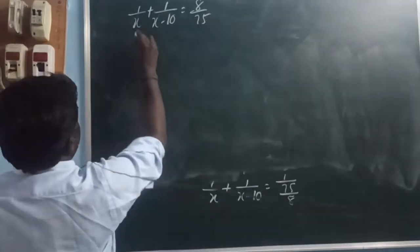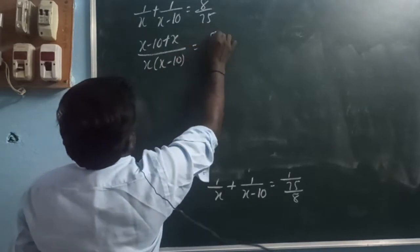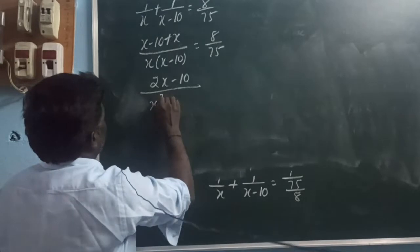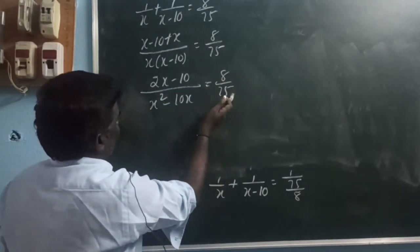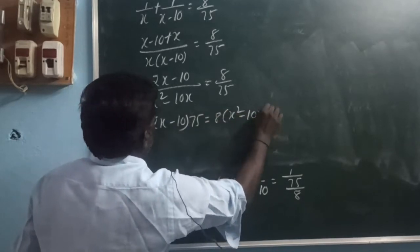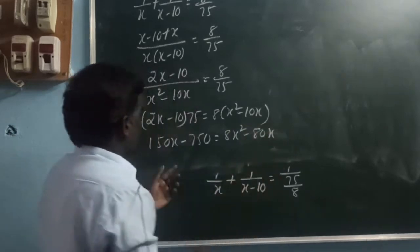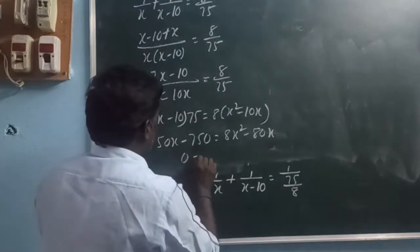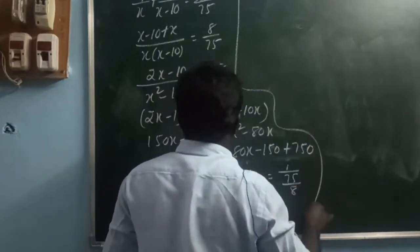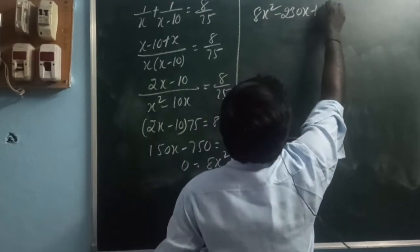Doing cross multiplication: (x−10 + x) / [x(x−10)] = 8/75, so (2x−10)/[x(x−10)] = 8/75. Using the distributive property, x(x−10) = x² − 10x. Cross multiplying: 75(2x−10) = 8(x²−10x), which gives 150x − 750 = 8x² − 80x. Rearranging: 8x² − 80x − 150x + 750 = 0, so 8x² − 230x + 750 = 0.